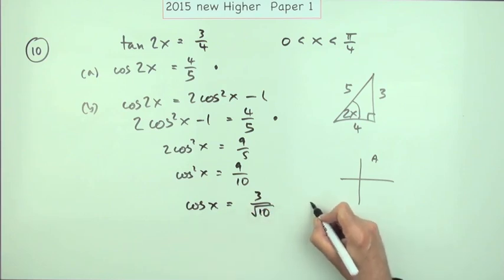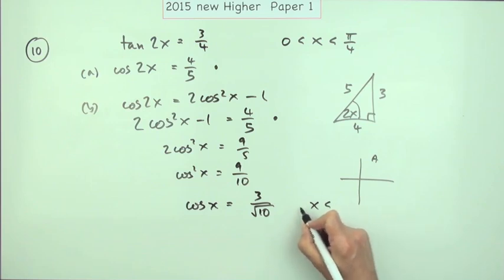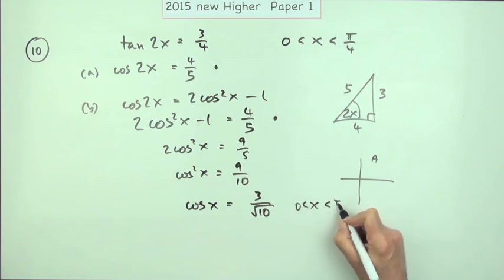But for an angle in the first quadrant, which is meant to be, everything's positive, so it's just equal to that because x is less than π upon 4.